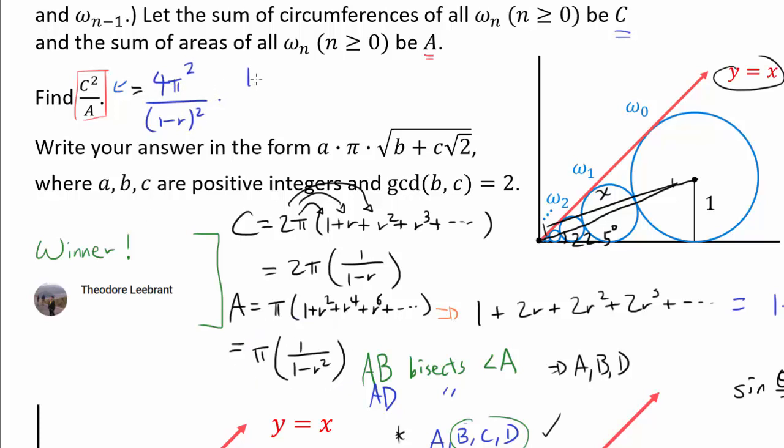And when we multiply by 1 over A, we're going to get (1 minus R²) divided by π. And this is going to be, we have 4π when we cancel out the π.